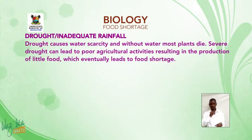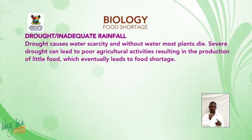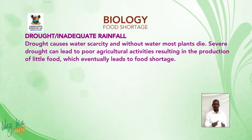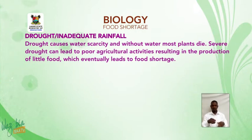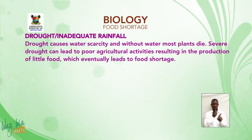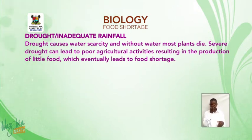Droughts or inadequate rainfall. Drought causes water scarcity, and without water, most plants die. Severe droughts can lead to poor agricultural activities, resulting in the production of little food, which eventually leads to food shortage.